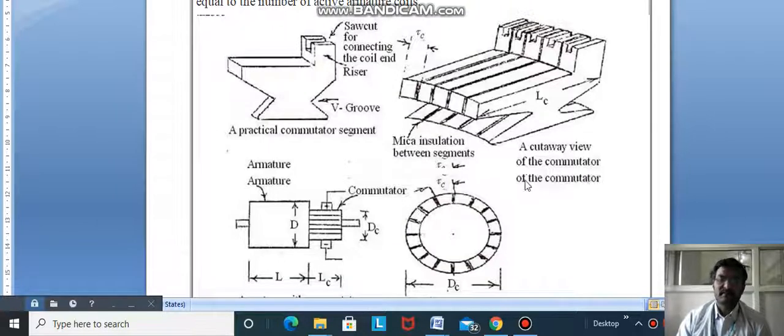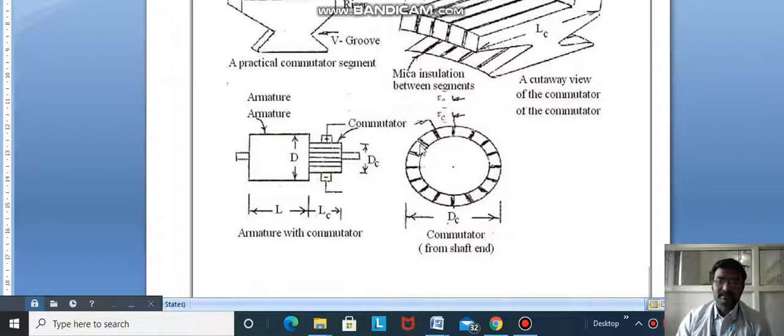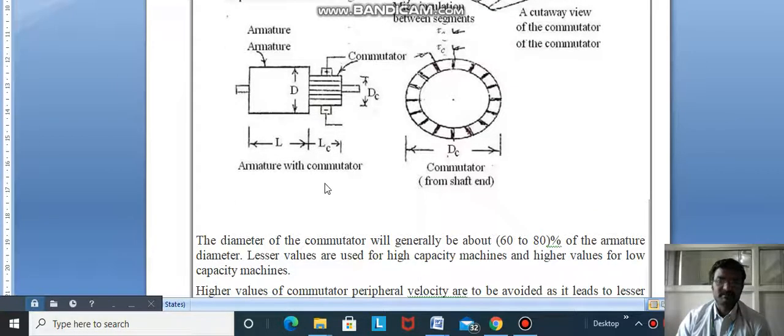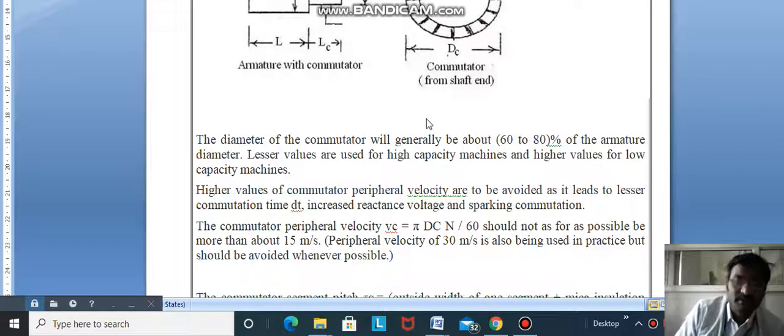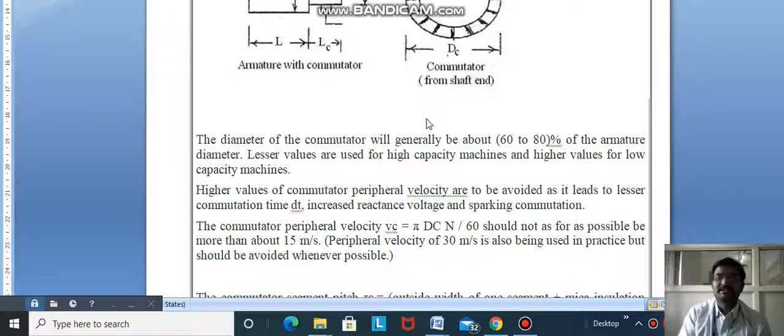A cutaway view of the commutator shows the brushes, the armature, and the commutator assembly. The diameter of commutator will generally be about 60 to 80 percent of the armature diameter.